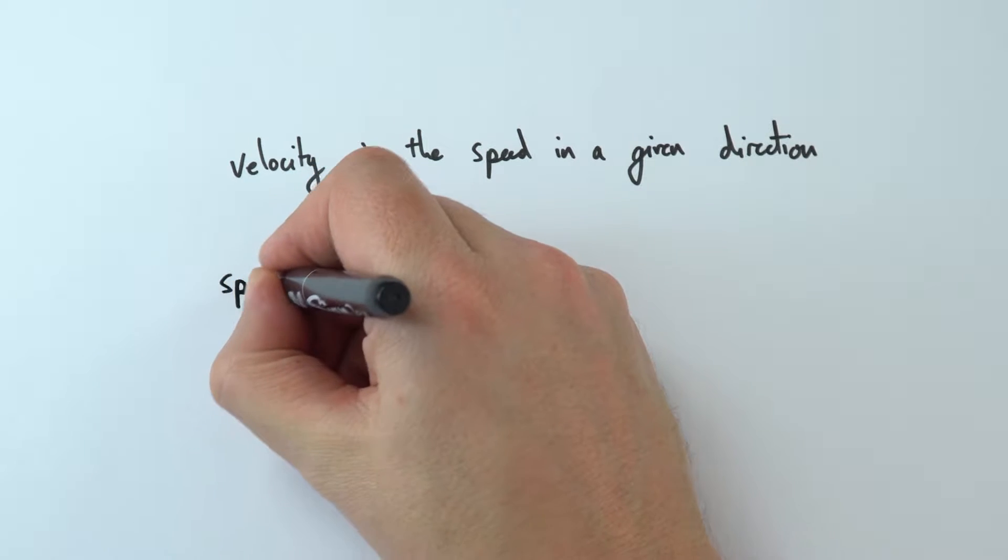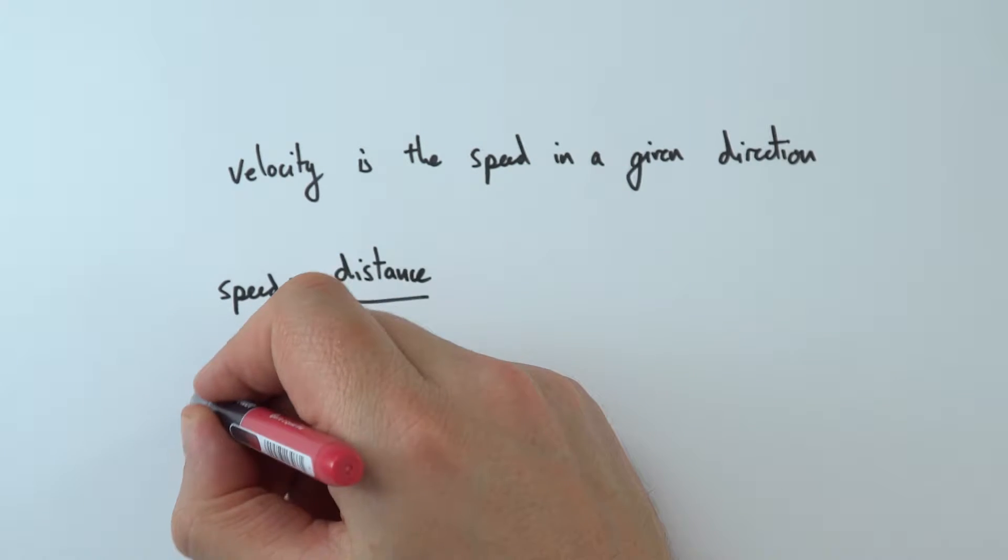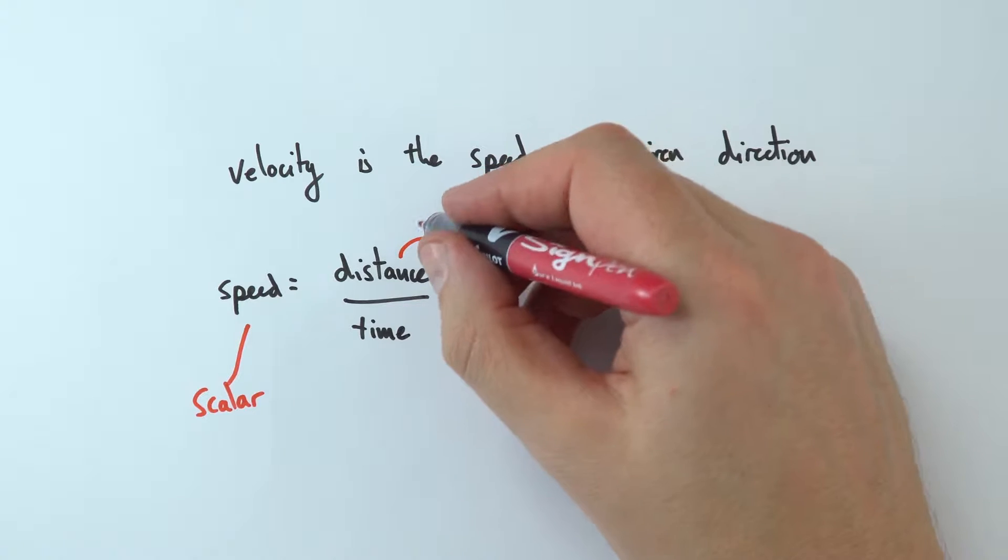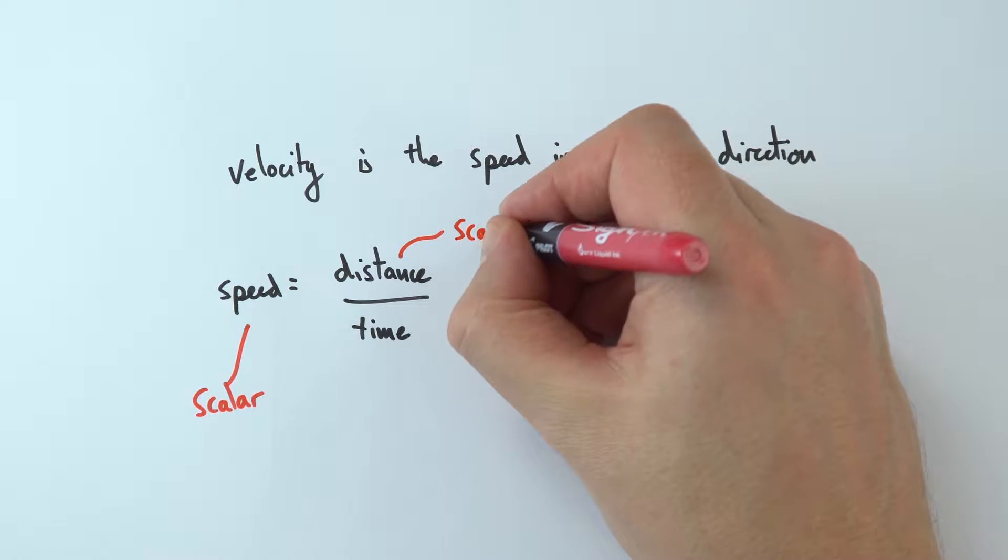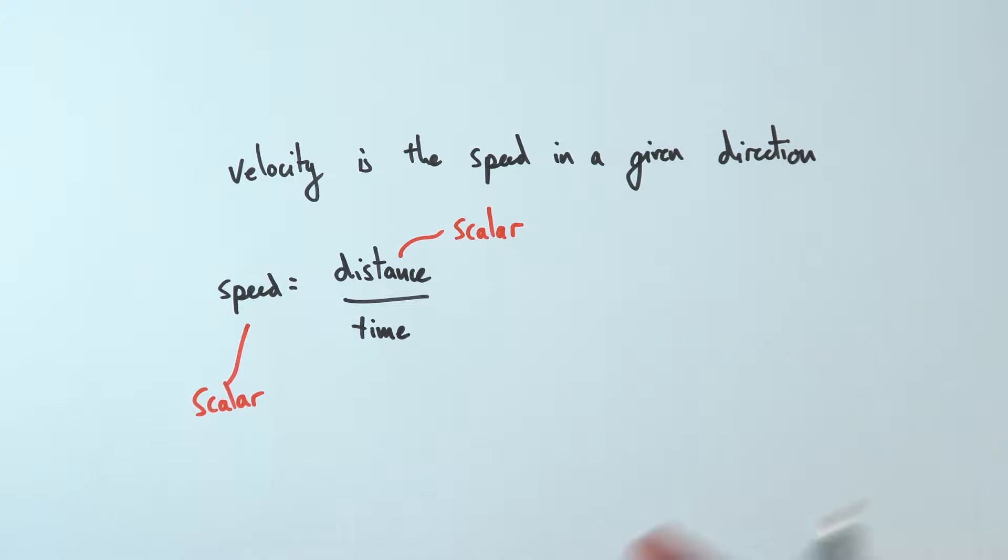You've got to remember that speed is equal to distance divided by time, where speed is a scalar quantity, so it only has size, and so is distance. Distance is just how far something has gone, so that is also a scalar quantity, and time is a scalar because it's just got size.